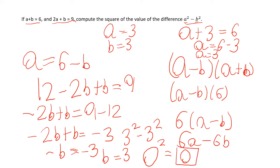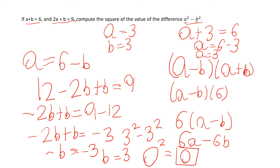So after all this work, we come to an answer of 0. We're done with the first problem — let's move on to the next problem. It's a little bit different. Go ahead and look at the problem and think about some ideas for how to approach it. We have x plus 1 equals 205, which tells us x equals 204.